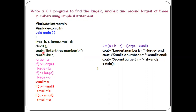Then comes cout with the stream insertion operator. cout stands for console output. Within double quotation: 'Enter three numbers', followed by backslash n which moves the cursor to the next line — this is an escape sequence. In the next line I'm accepting three values using cin with stream extraction for a, b, and c. This style of writing is called cascading of input — using a single input statement with multiple stream extraction operators to accept more than one value.